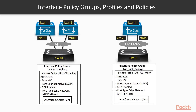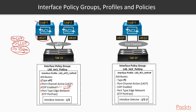The first object we are going to create contains every single attribute that the interface will have. For example, if we want to configure a trunk port, we can enable the port to exchange CDP information, LLDP information, and hard code the speed — say, 10 gigabits per second on a particular interface.